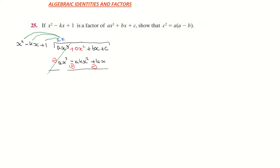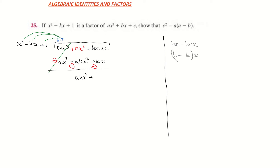Now I change the signs and subtract. ax cubed minus ax cubed cancels to zero. Zero plus akx squared leaves positive akx squared. For the x terms, I have bx minus ax, which I factorize as b minus a all times x. I then bring down my constant c.